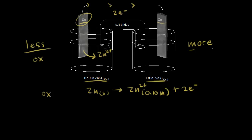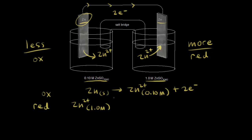Now let's think about the more concentrated side. The more concentrated side needs to decrease its concentration of zinc 2+ ions in solution. It can do that if zinc 2+ ions come out of solution by gaining electrons to form solid zinc. So that's a reduction — reduction occurs on the more concentrated side. This would be zinc 2+ ions at 1.0 molar gaining two electrons to form solid zinc.